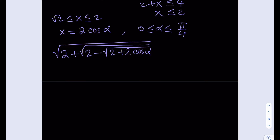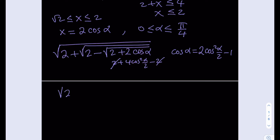We can reduce cosine alpha using 2 cosine squared (alpha/2) minus 1, in order for the 2 to cancel out. After distributing, we get 4 cosine squared (alpha/2) minus 2, and the 2 cancels out. Taking the square root gives 2 cosine (alpha/2), which is positive since alpha is in the first quadrant and half of that is also there.